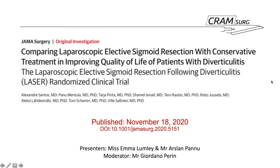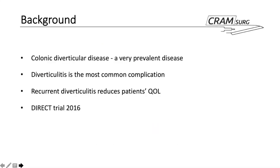A bit of background: diverticular disease is a common disorder that can reach up to 70% prevalence in the over-80s. The commonest complication is acute diverticulitis, the severity of which ranges from mild attacks to life-threatening peritonitis. Diverticulitis tends to recur and reduces patients' quality of life, and it is thought that sigmoid resection might act to increase quality of life. The only prior RCT comparing conservative treatment with elective sigmoid resection was the DIRECT trial published in 2006. The LASER trial differs subtly in that it recruited patients with abscesses and focused more on recurrent diverticulitis and less on persisting pain.